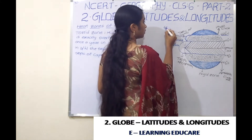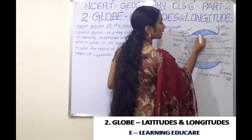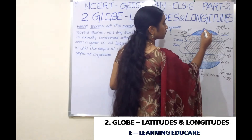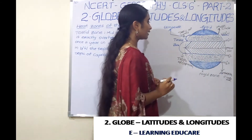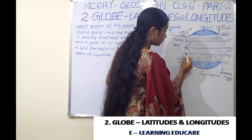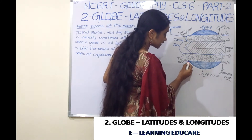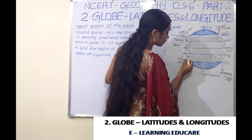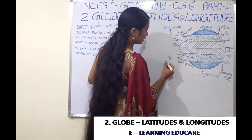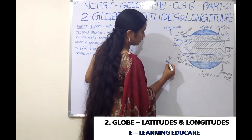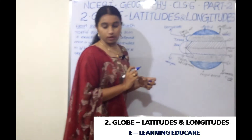We can see the Temperate Zone here. The first blue color is the Frigid Zone. This is the Temperate Zone. This is the Tropic of Capricorn. At 66 degrees is the Antarctic Circle. This is the Temperate Zone in the southern hemisphere, and this was the Frigid Zone.